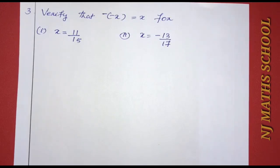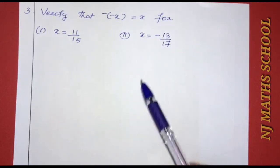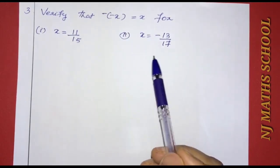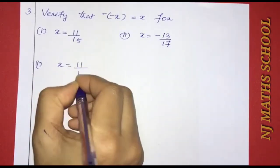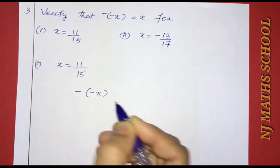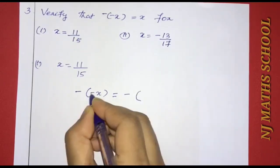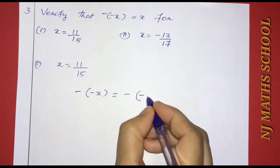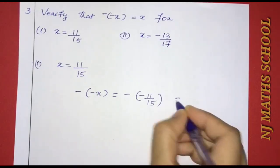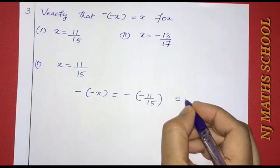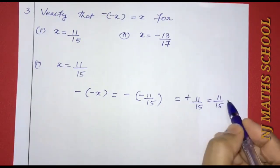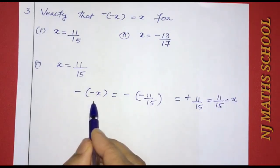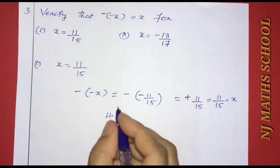Next question: verify that negative of negative x equals x. We have two values: x equals 11 by 15 and x equals negative 13 by 17. For x equal to 11 by 15: negative of negative x equals negative of (negative 11 by 15), which gives positive 11 by 15, which equals x. Hence verified.